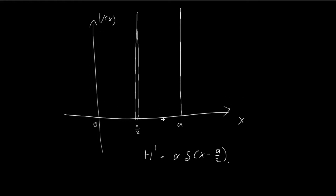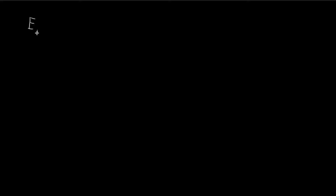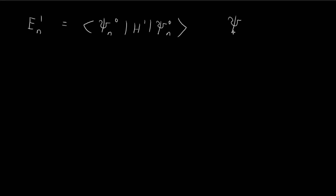For this problem, we have the infinite square well with a perturbation located at a/2, which is given by the delta function. What we want to find in part a is the first order correction to the allowed energy levels. The n-th stationary state for the unperturbed infinite square well is equal to the square root of 2/a times sine(nπ/a · x), applicable for x between 0 and a.